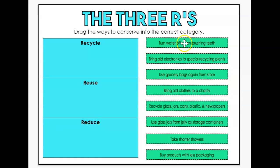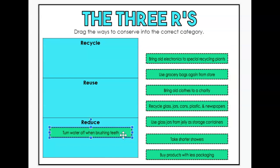So let's move some of these examples. Turn water off when brushing your teeth. That's an example of reducing the amount of water that you use.